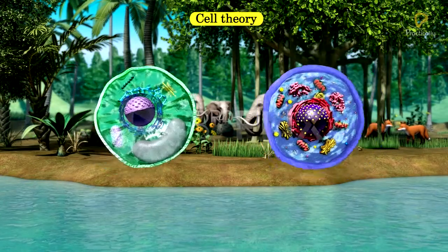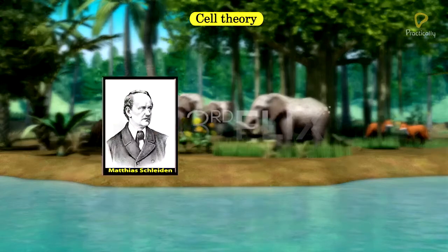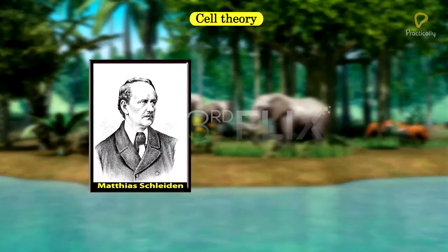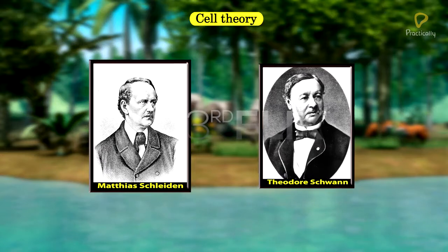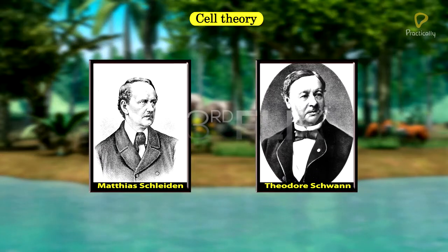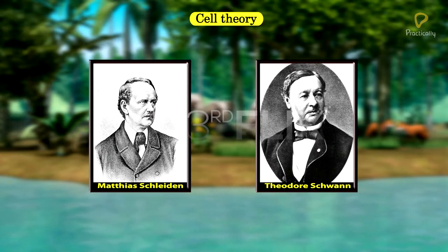A German botanist, Matthias Schleiden, and a German zoologist, Theodor Schwann, together formulated cell theory, or cell doctrine.